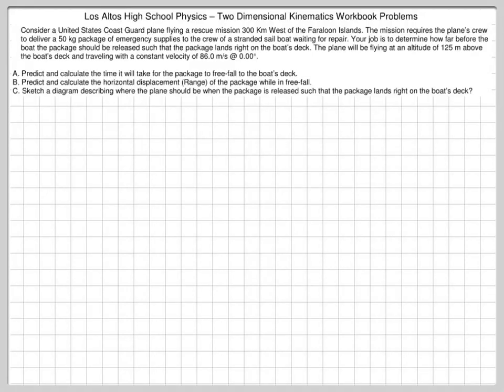This problem asks us to consider a rescue mission that the Coast Guard is performing to rescue a stranded boat somewhere west of the Farallon Islands. What's interesting about this problem is that an object is being released from the apex and then falling towards the ground. The initial velocity of this package will be horizontal, no vertical component of the velocity, and then it will just free-fall to the ground below.